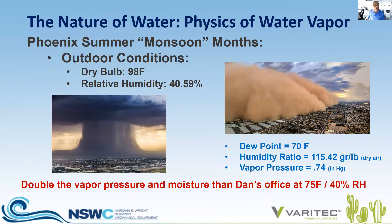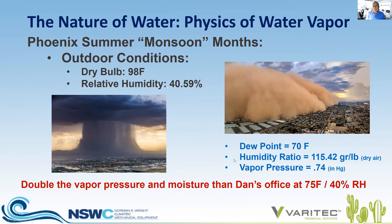In monsoon season, we have a lot of moisture that comes up from the equator and we need to be aware of that in our HVAC designs. A general design condition is 98 degrees Fahrenheit dry bulb. I use a relative humidity during monsoon of 40.59%, which works out to about 78 degrees wet bulb. At that condition, the dew point of the air is 70 degrees — that's when we have moisture forming on cold surfaces, such as a glass of iced tea. The humidity ratio is 115.42 grains per pound, and the vapor pressure is 0.74 — double the vapor pressure and moisture content of my office.